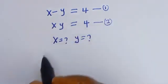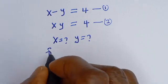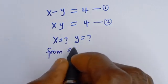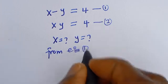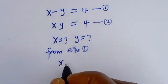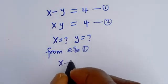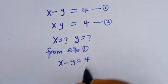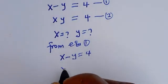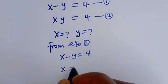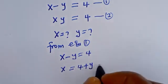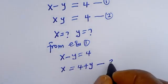From equation 1, we can make x the subject of the formula. So x minus y is equal to 4, which gives us x is equal to 4 plus y. Let's call this equation 3.